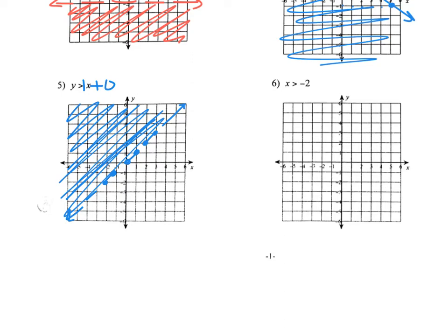And then six, x is greater than or equal to negative two, so x lines run through, cut through the x-axis. It's a dashed line because it's just a strict inequality, and then we're going to be shading greater than, so that's going to be to the right.